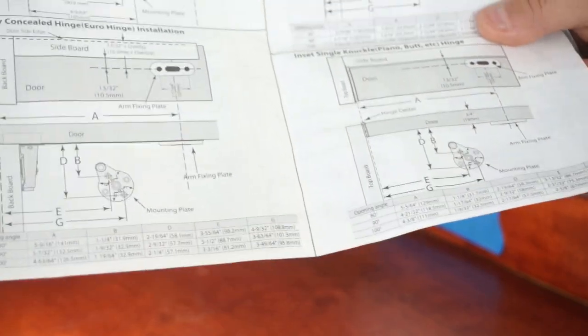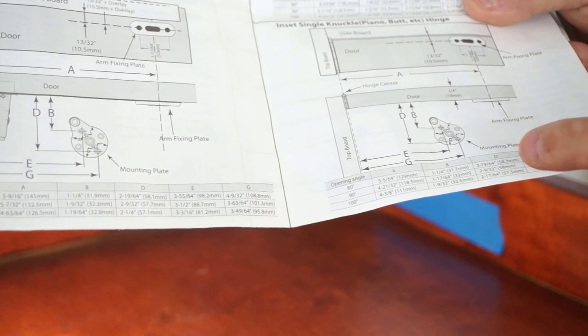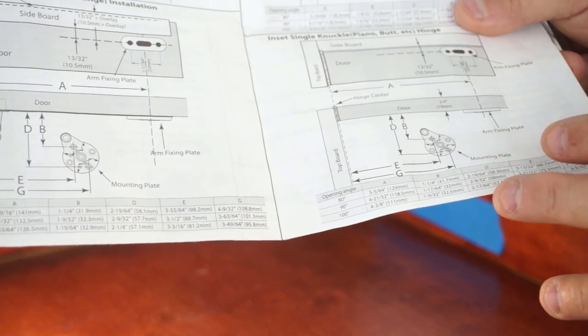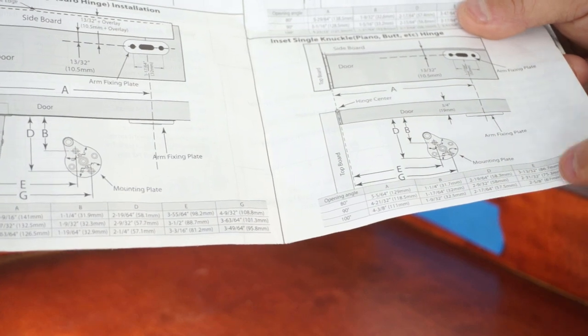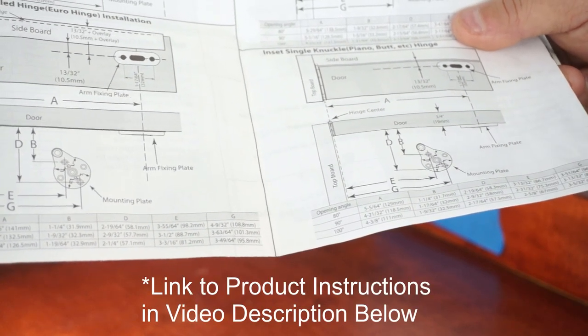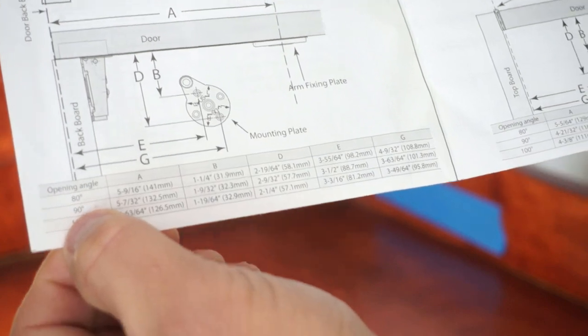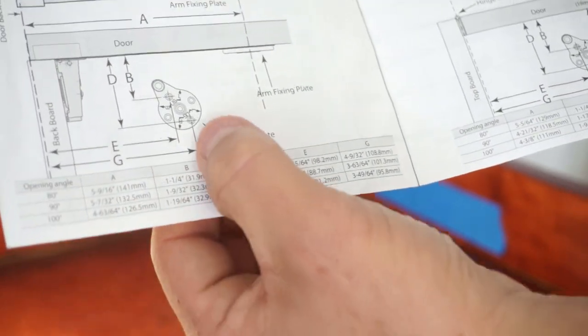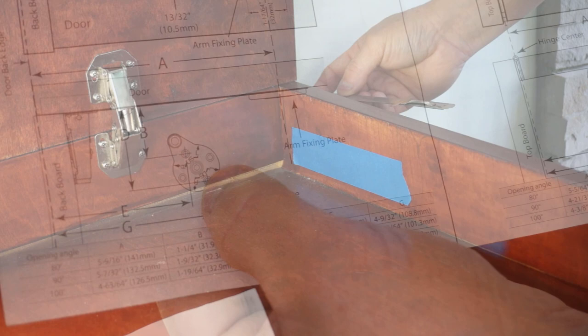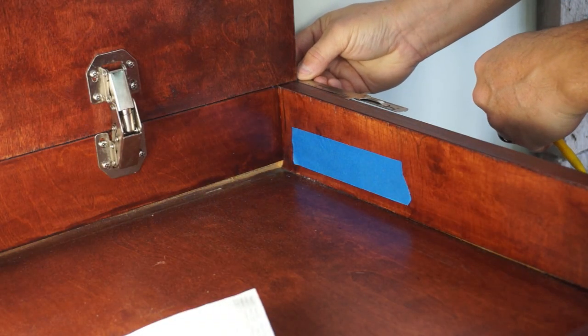One of the issues some people were having with the hinges is that they weren't getting clear instructions they could read. This last order I got, I got some pretty good instructions, so I will find that and put a link in the description below if you are missing yours. We're going to go with our 90 degree opening angle here and just follow these measurements of where we need to place the bracket. So from the back edge of the door, which is the back of the cabinet, we need to measure...